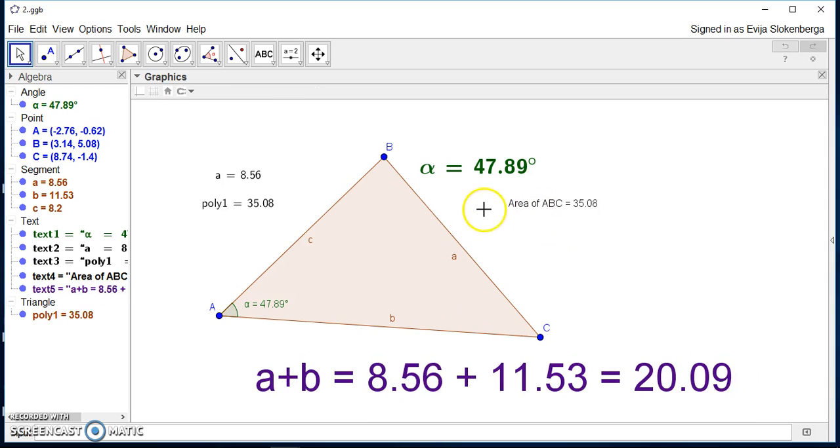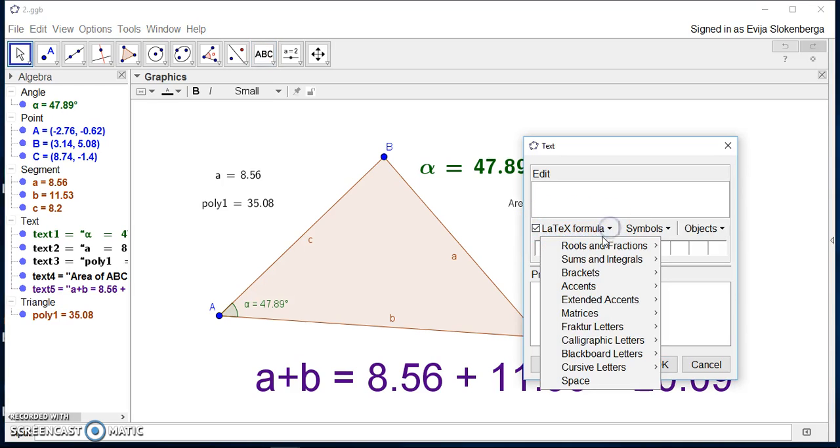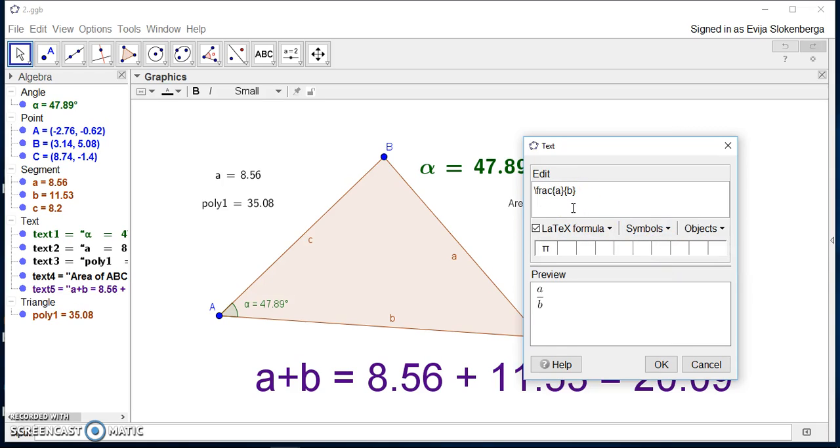And there may be some cases when you need something more specific, something more advanced. And here we can also use the text box and if we check LaTeX formula we can use for example roots and fractions. And let's take that we want a fraction A and B. And let's say we want to know what is the ratio of the sides A and B. So we can't write just A and B. We need to use the object again.